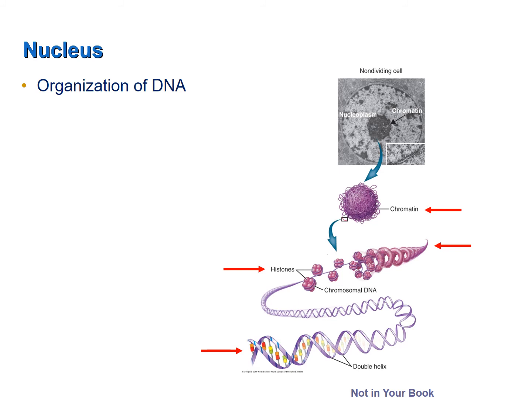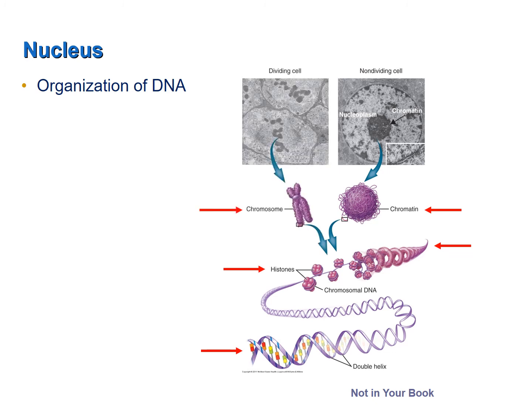Chromatin is a very unorganized form of DNA, which would make it very difficult to segregate during mitosis and cell division. Therefore, in preparation for and during cell division, chromatin is condensed into chromosomes. Although only one chromosome is shown here, the human body contains 46 chromosomes.